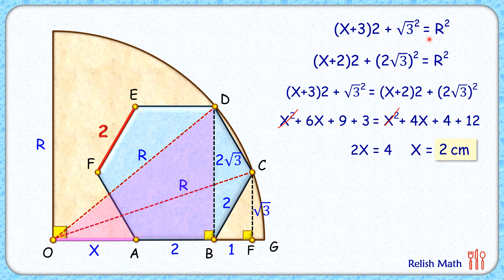Putting this value of x = 2 centimeters in our first equation, we will get R² = (2+3)² + (√3)². Now this 5² + 3 = 28, so R² = 28, or R = 2√7 centimeters, and that's our answer.